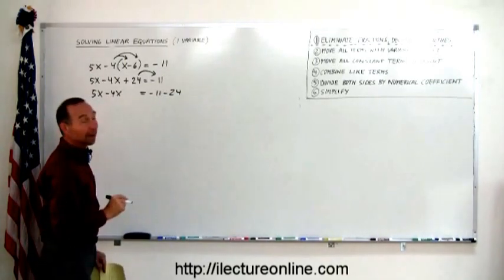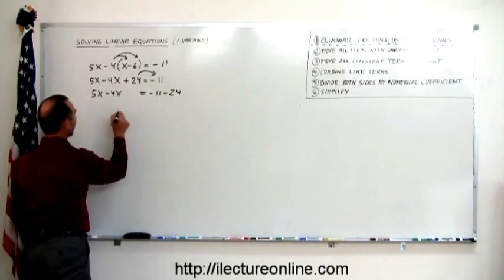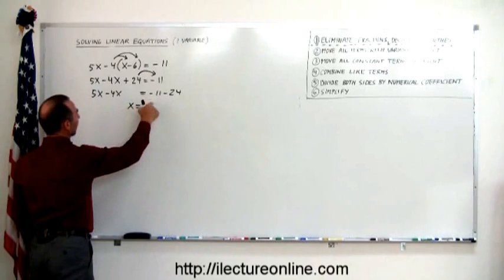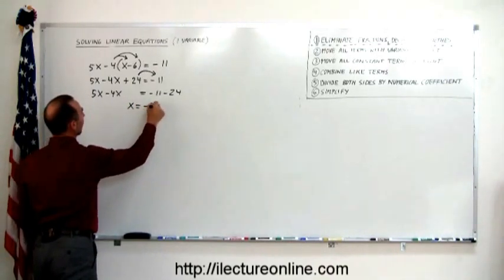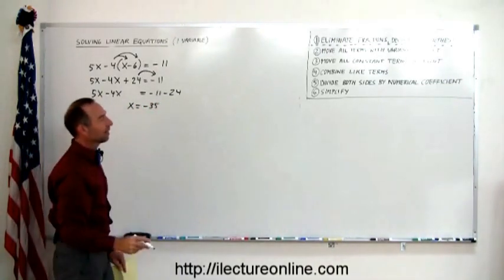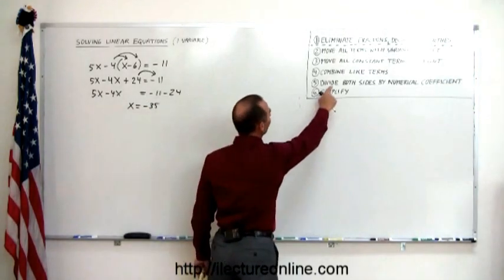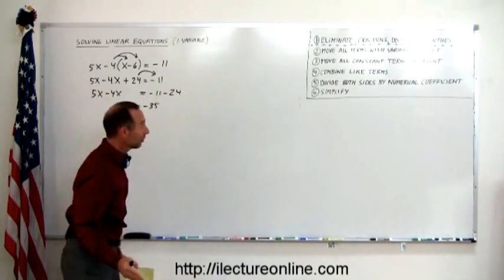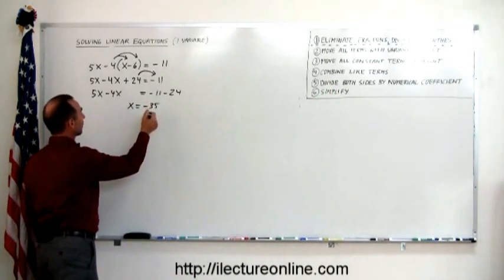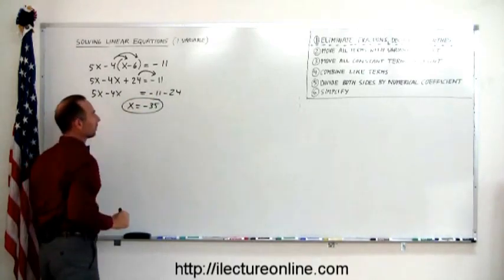Next step says combine like terms. 5x minus 4x is x. Minus 11 minus 24 is minus 35. And the next step is no longer necessary. It says divide both sides by numerical coefficient. But on the left side we have a 1x. So there's our answer. Done.